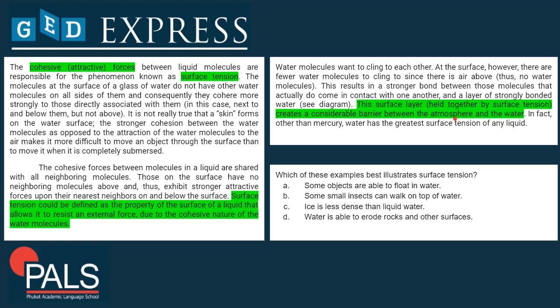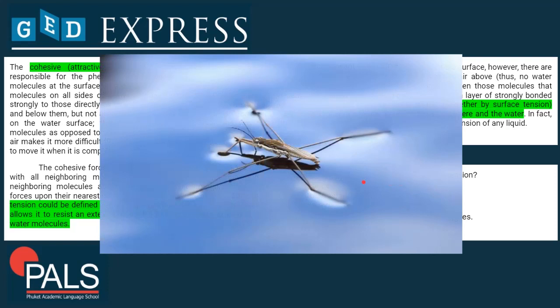C and D are similar — ice is less dense than liquid water, but the question is not about density. And it is not about the erosion of rocks. So looking at B — some small insects can walk on top of water. 'On top' relates to the surface. Why can some insects walk on top of water? Because the water molecules on the surface attract each other more strongly, leading to surface tension and allowing some insects to walk on top — for example, the water strider, which every one of you has probably seen walking on water because of surface tension.